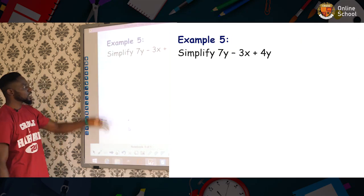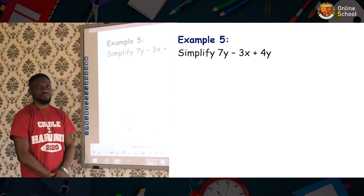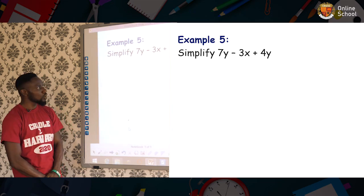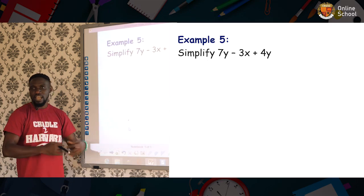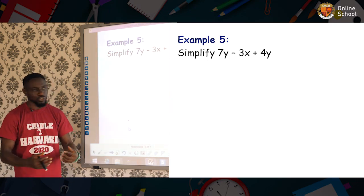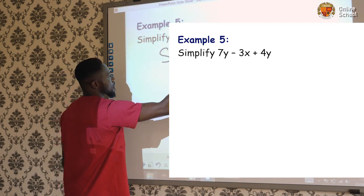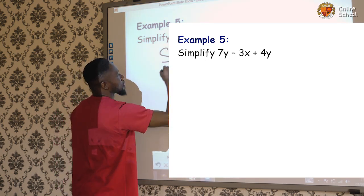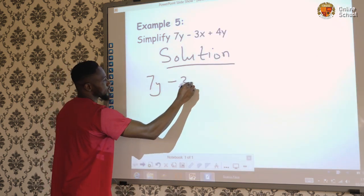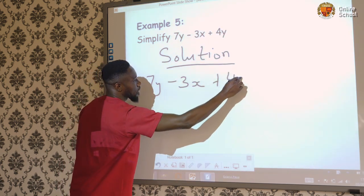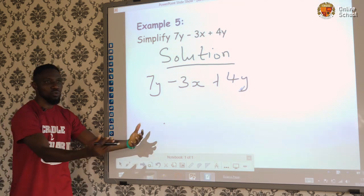Now, let's look at this example 5. It says simplify 7y - 3x + 4y. Like I said earlier, we'll group the like terms together. And then within the like terms, we'll group those that are positive together and negative ones together. Now, look at this. We'll have solution. It says 7y - 3x + 4y. Now, we can group this together. What do we do? We bring the y terms together.